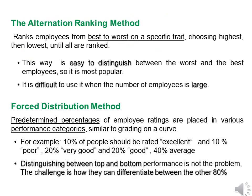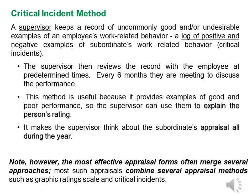The alternation ranking method ranks employees from best to worst on a specific trait, which is difficult when the number of employees is large, but is an easy way to distinguish between the worst and best. For large numbers, the forced distribution method uses predetermined percentages to place employees in performance categories. In the critical incident method, a supervisor keeps a record of uncommonly good and uncommonly undesirable behaviors throughout the whole year.